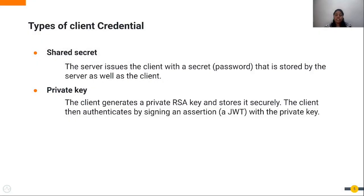In order to do client authentication, the client should possess a secret — either a shared secret or a private key. With a shared secret, when a client registers to the authorization server it receives a client ID and secret, stored on both client and server sides. With a private key, the client generates an RSA key pair, keeps the private key, shares the public key with the authorization server, and uses the private key to sign the JWT assertion sent with the token request.